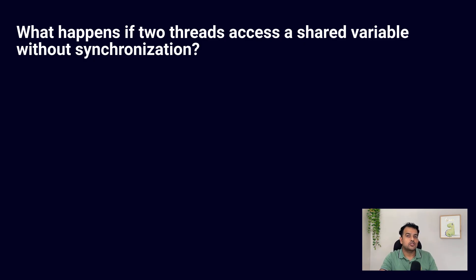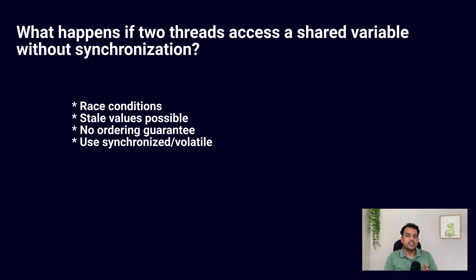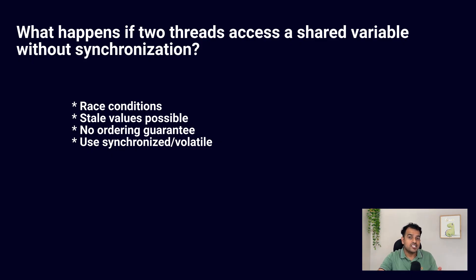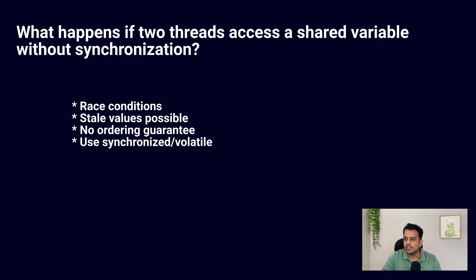It leads to inconsistent behavior. One thread may overwrite the value written by another thread. Without synchronization, there is no guarantee about the order of execution. You may get stale values because each thread might read from its own CPU cache. That is why we use the synchronized keyword, the volatile keyword, or other concurrency utilities.